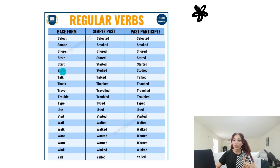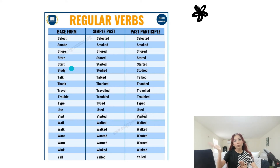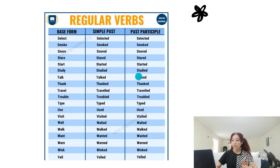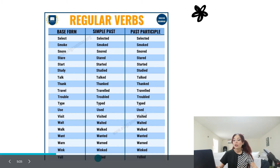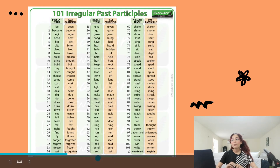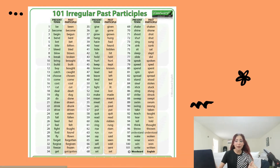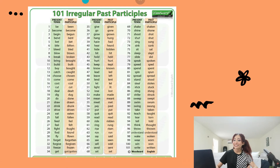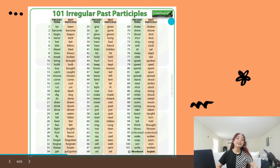We have some exceptions. For example, if the verb ends with Y — like in study — we take away that Y, change it into I, and add -ed: studied. So what happens if we have irregular verbs? This is a long list, but it doesn't mean these are the only irregular verbs that exist.